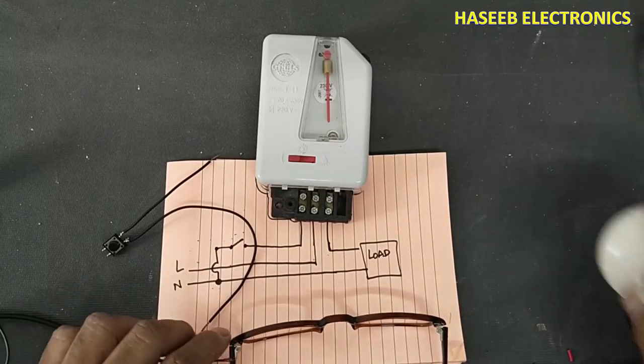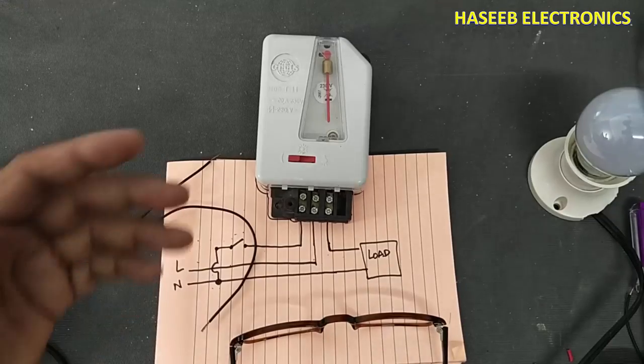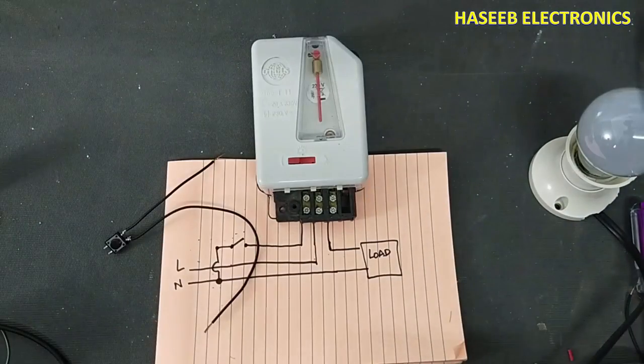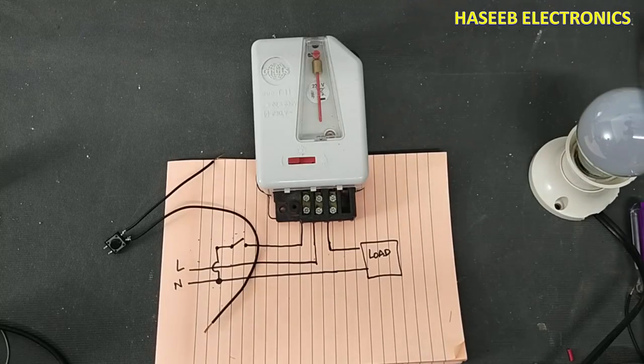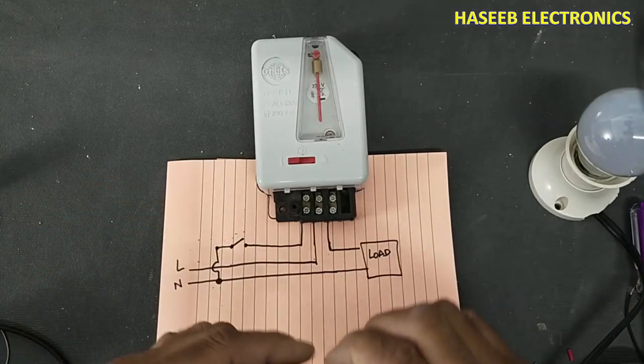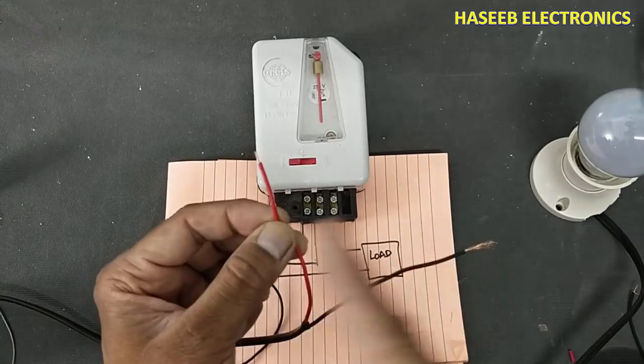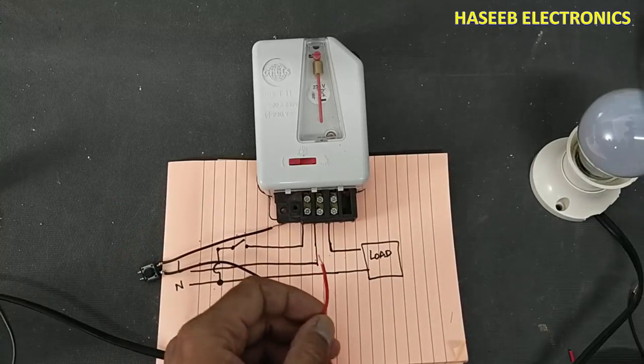Assalamualaikum warahmatullahi wabarakatuhu friends, welcome back to my channel. In this session we will see how we can make wiring connection for this analog timer. It is used for different appliances, for staircase lamp, bathroom fan. Line neutral line we will connect.